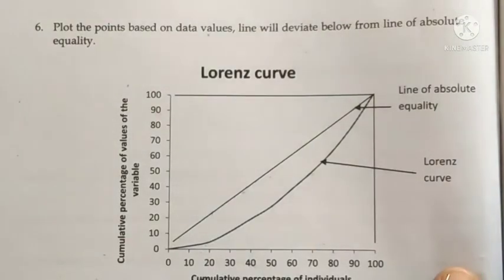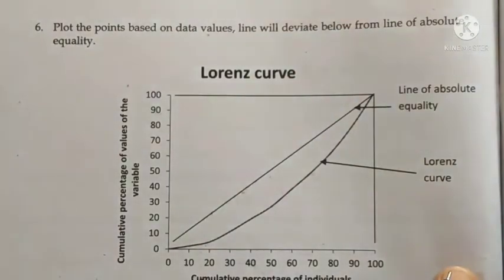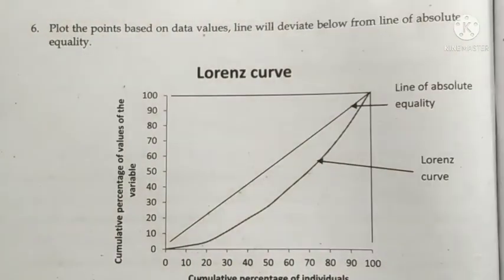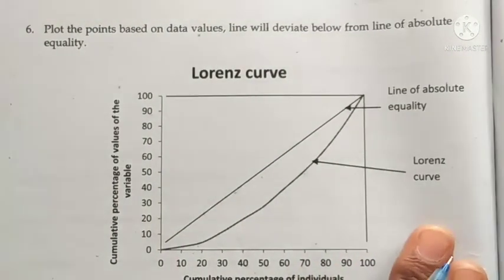Sixth, plot the points based on the data values. The resulting line will fall below the line of absolute equality.